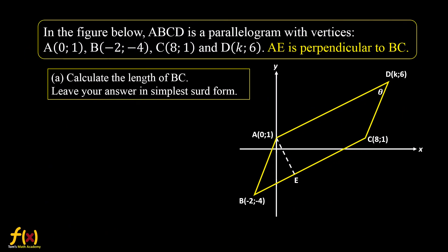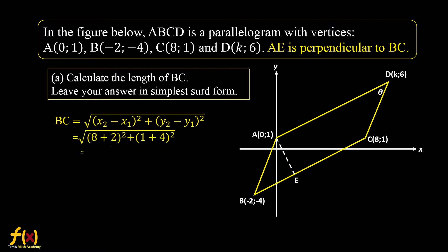Another question: ABCD is a parallelogram and all vertices are available. AE is perpendicular to BC. Question A: calculate the length of BC. We use the distance formula from the formula sheet: root of (x2 − x1)² + (y2 − y1)². Using the coordinates of B and C, we carefully substitute and use the calculator. The length of BC is 5√5.